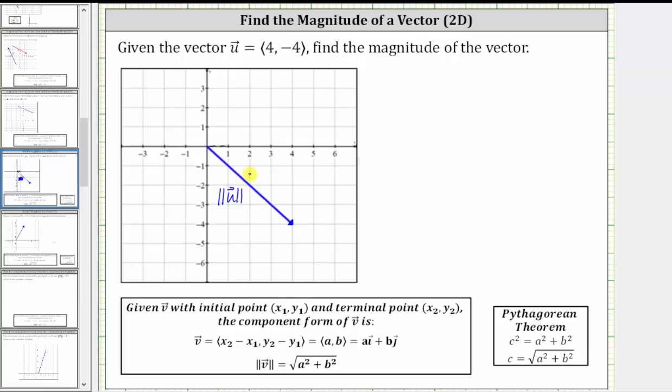And now if we sketch the horizontal and vertical components of the vector, we can see this is nothing new. This is the same as determining the length of the hypotenuse of a right triangle using the Pythagorean theorem. Instead of c, though, we use the magnitude of the vector.